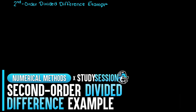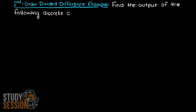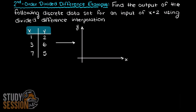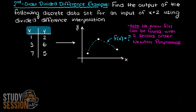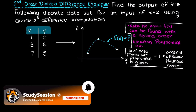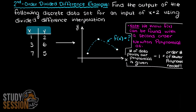In the second order divided difference interpolation example video, we are going to be walking through how to solve a second order Newton divided difference example. This question asks us to find the output of a following discrete dataset for an input of x equals 4. Our first thing to do is determine what order Newton interpolating polynomial we will be solving. Since interpolating polynomials must always pass through every data point, our Newton polynomial will always be order n minus 1, where n is our number of data points. Therefore in this problem, since we are supplied 3 data points, we are solving for a second order divided difference.